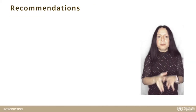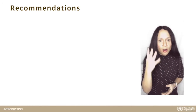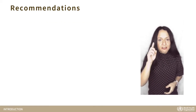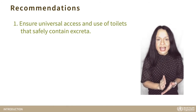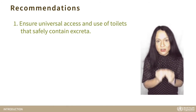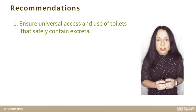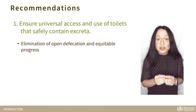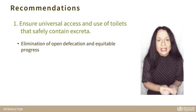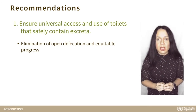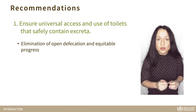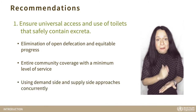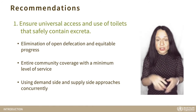Based on the comprehensive evidence review, four main recommendations were derived for action by national and local authorities. The first one is to ensure universal access and use of toilets that safely contain excreta. This recommendation urges governments to prioritize the elimination of open defecation and universal access to toilets while planning for equitable progress. Authorities need to strive to cover the entire community with safe toilets, using demand-side and supply-side approaches concurrently.